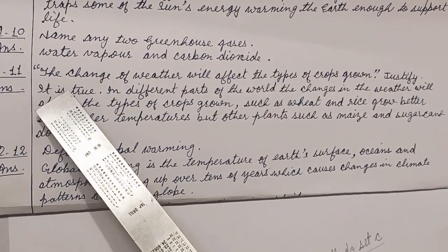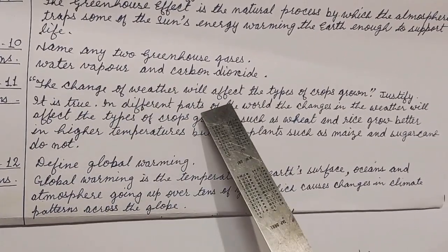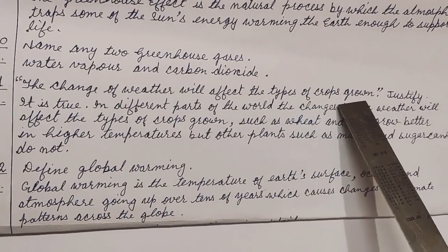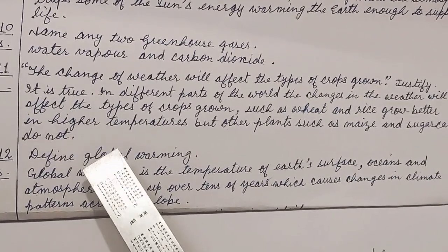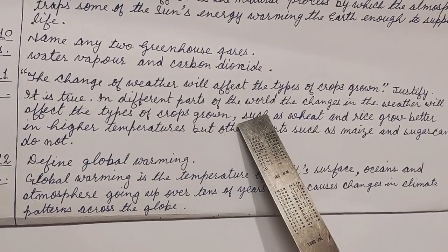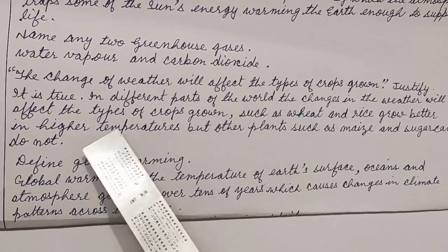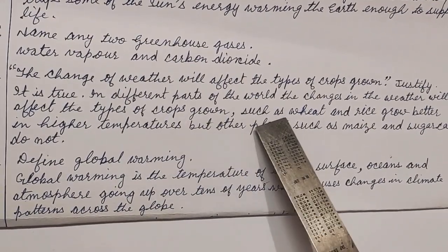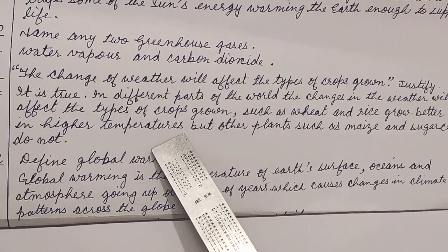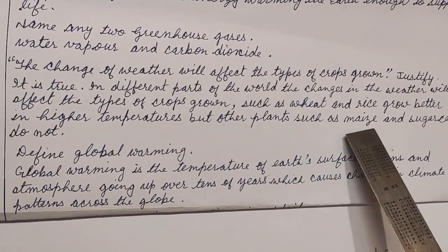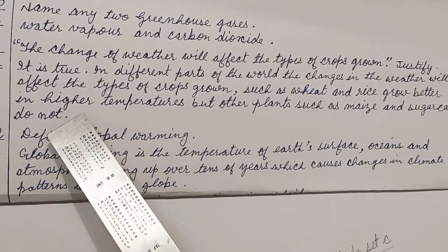Question number 11. The change of weather will affect the types of crops grown. Justify. Answer. It is true. In different parts of the world, the changes in the weather will affect the types of crops grown, such as wheat and rice, grow better in higher temperatures. But other plants such as maize and sugarcane do not.